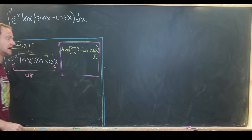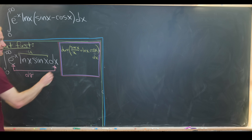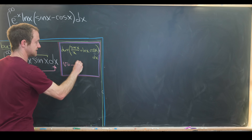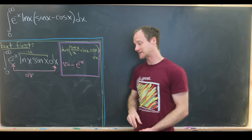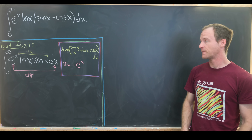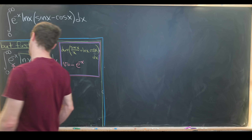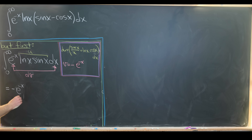To get off the ground we'll look at part of this integral — the part involving sine x — and we'll do a quick calculation using integration by parts. Our choice for u and dv will be as follows: we'll take dv to be e to the minus x dx, because that's the part we know how to integrate, and we'll take u to be natural log of x times sine of x.